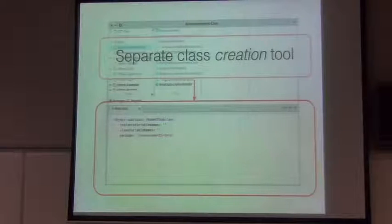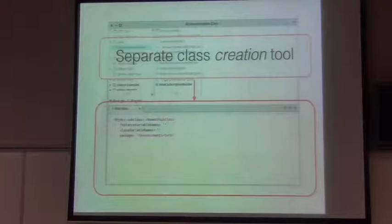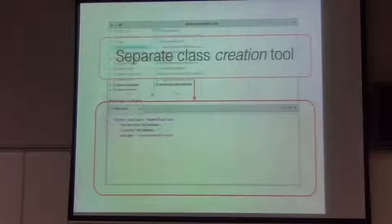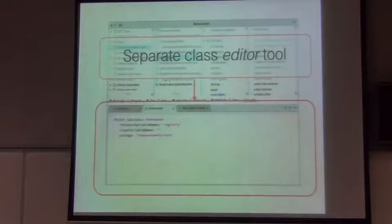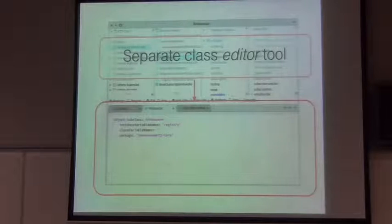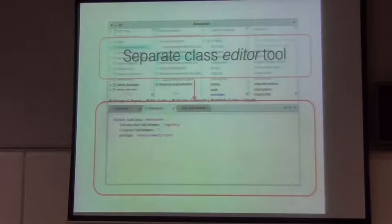Now I'll show what separate tools we have. There is a separate class creation tool which knows the user wants to create a new class on the selected package. There is a separate class editor tool which is activated when you select a class. The idea of this separation is that it simplifies a lot of code, because when we know what we are doing, we don't need many if-true, if-false branch conditions in the code.